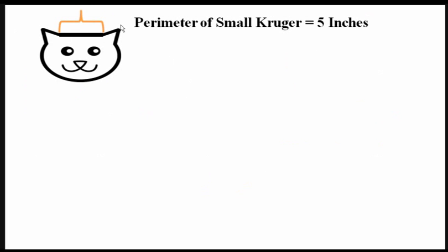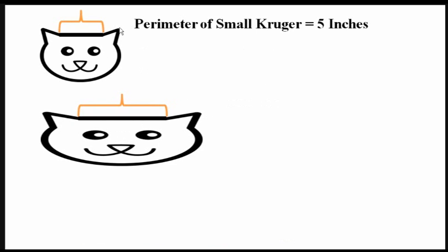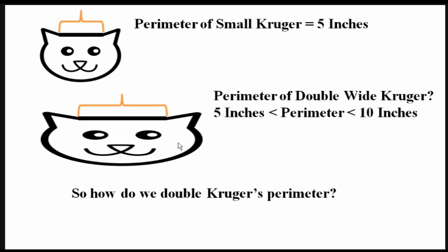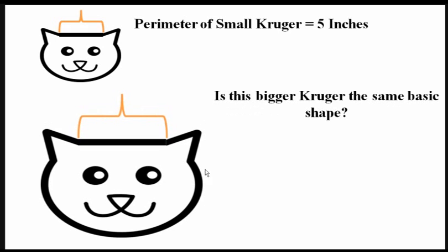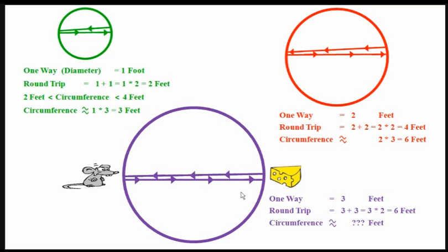Mac wants to have some idea about what the circumference is. Circumference is just the distance around the whole circle — the word circumference even sounds like circle. What Mac wants to know is the circumference of this circle. He doesn't need to know it exactly; he just wants a rough idea, an estimate, of what he's in for if he starts running around this pie tin and Kruger starts chasing him. We have a circle with a diameter of one foot. I want you to come up with a rough idea of what the distance would be for Mac to run all the way around the circle. Time to pause and ponder.